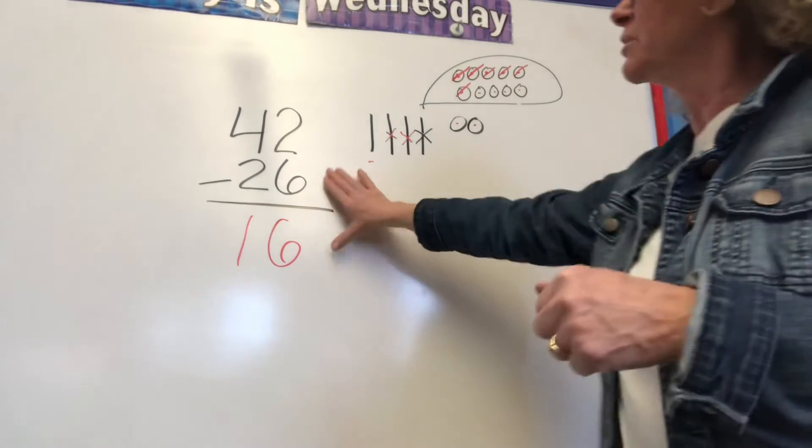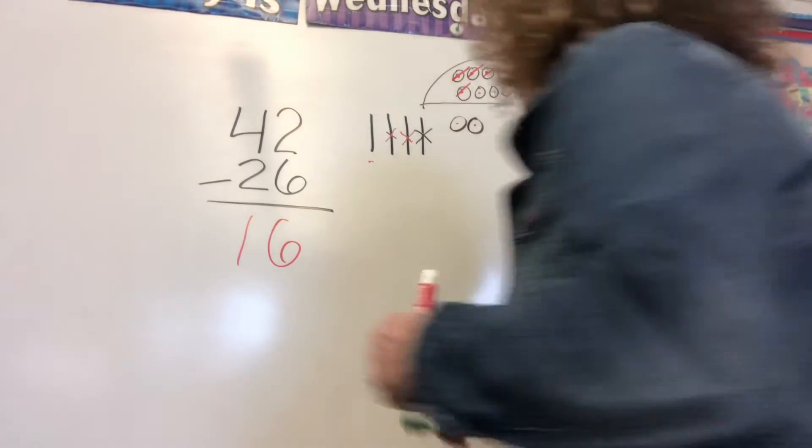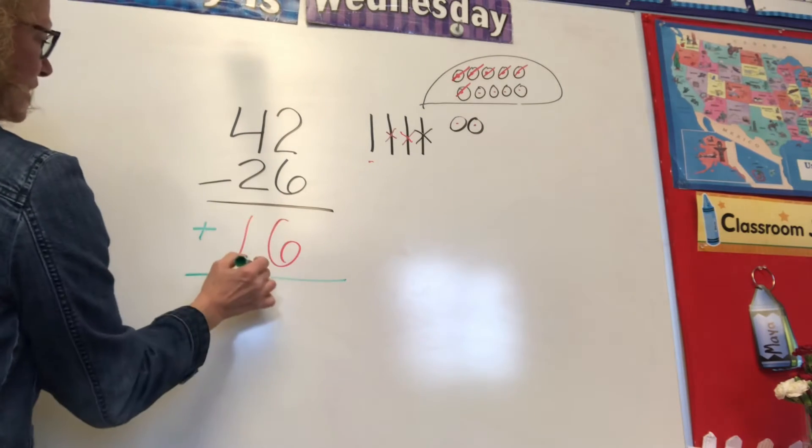Now in my class they have to prove to me that the two little guys equal the big guy, and this is how we do it. Nothing too fancy. I just put another line and I'm going to add 26 and 16.